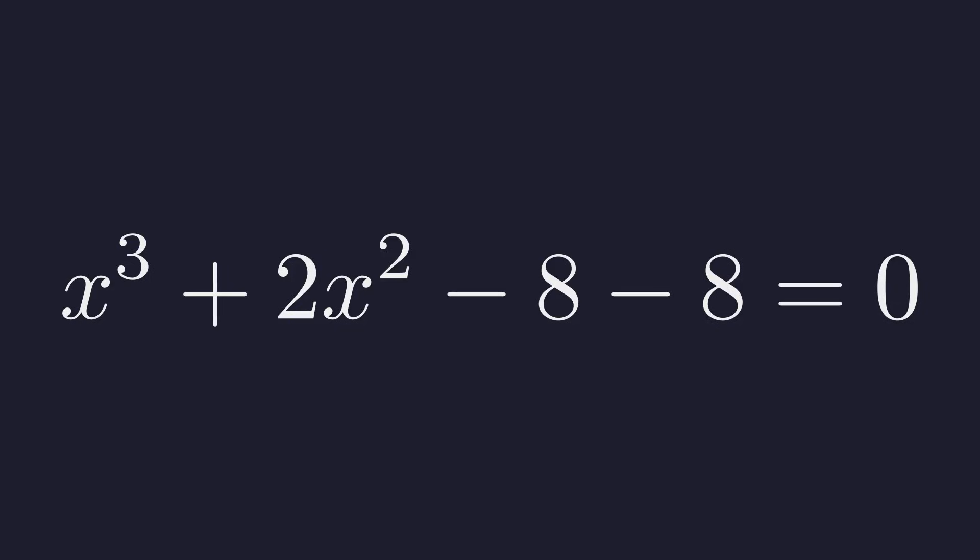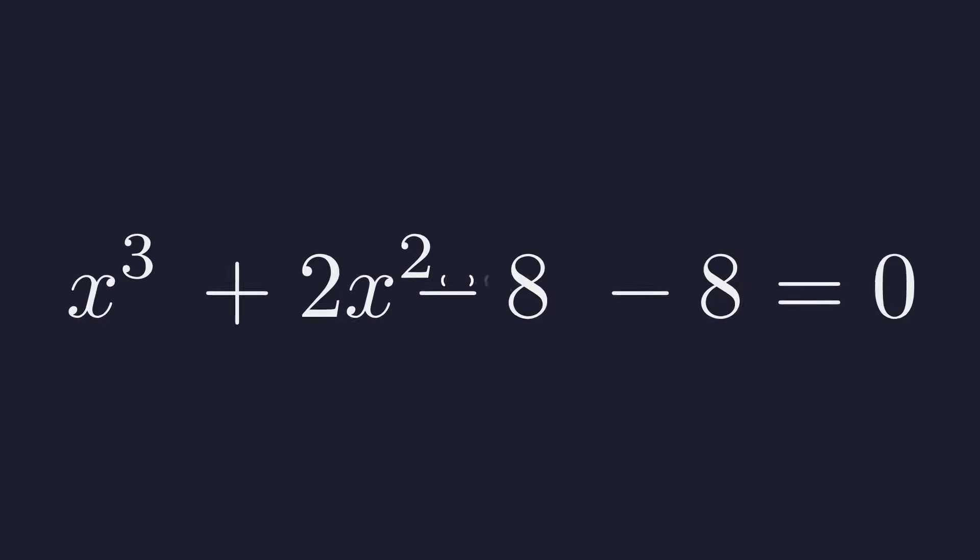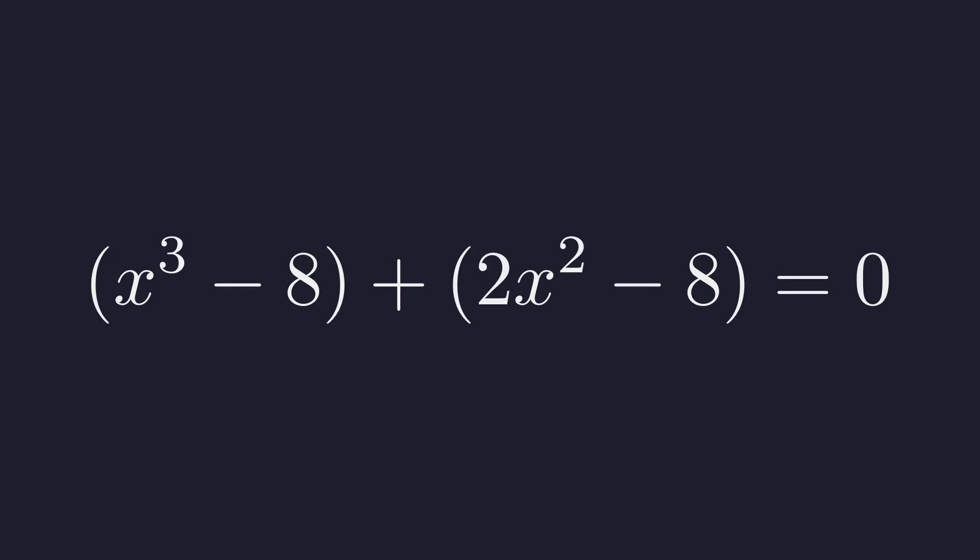This decomposition is really just setting us up to group terms in a way that reveals patterns you might recognize. So we group x cubed with the first negative 8 and 2x squared with the second. Notice how two distinct structures are starting to emerge.